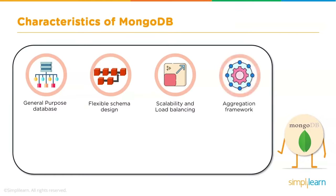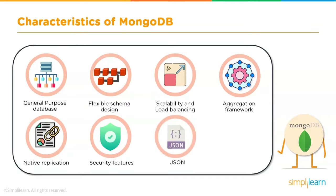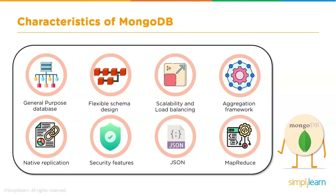MongoDB also offers an aggregation framework — an extract, transform, and load framework that eliminates the need for complex data pipelines. Native replication allows data to be replicated across a replica set without complicated setup. JSON is widely used across the web for front-end and API communication, and MongoDB is compatible with the same protocol. Lastly, MapReduce is an excellent tool to build data pipelines, and MongoDB uses MapReduce readily.